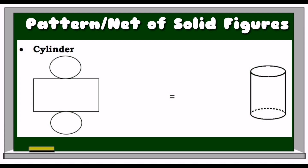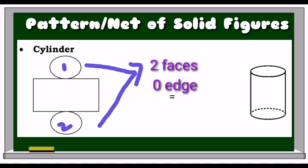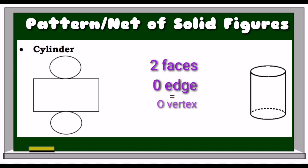This net is for cylinder. A cylinder has 2 faces, 0 edges, and 0 vertices.